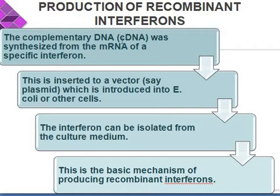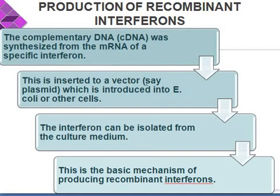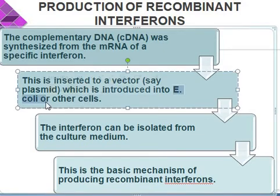In this case, as you can see in this particular diagram, the procedure steps are as follows. The first step is that complementary DNA, i.e., cDNA, is synthesized from the mRNA of a specific interferon. This is inserted into a vector — as we already discussed in earlier cases for production of insulin or somatotrophin. The plasmid, commonly used for insertion of the gene of interest, is introduced into bacteria, i.e., E. coli or other cells. After that, interferon can be isolated from the culture media, which is carried out by production of a large number of E. coli from the second step.